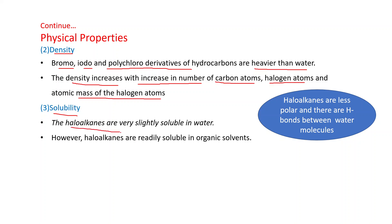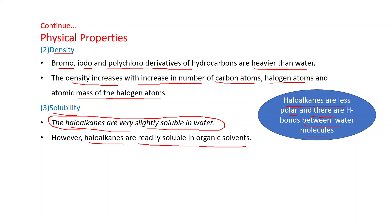Solubility: haloalkanes are very slightly soluble in water. Although haloalkanes are polar, water molecules are associated by hydrogen bonds. To dissolve, these hydrogen bonds between water molecules must be broken. But due to the lesser polarity of haloalkanes, hydrogen bonds between water molecules are not broken down properly, so their solubility in water is less. However, haloalkanes are readily soluble in organic solvents — like dissolves like.